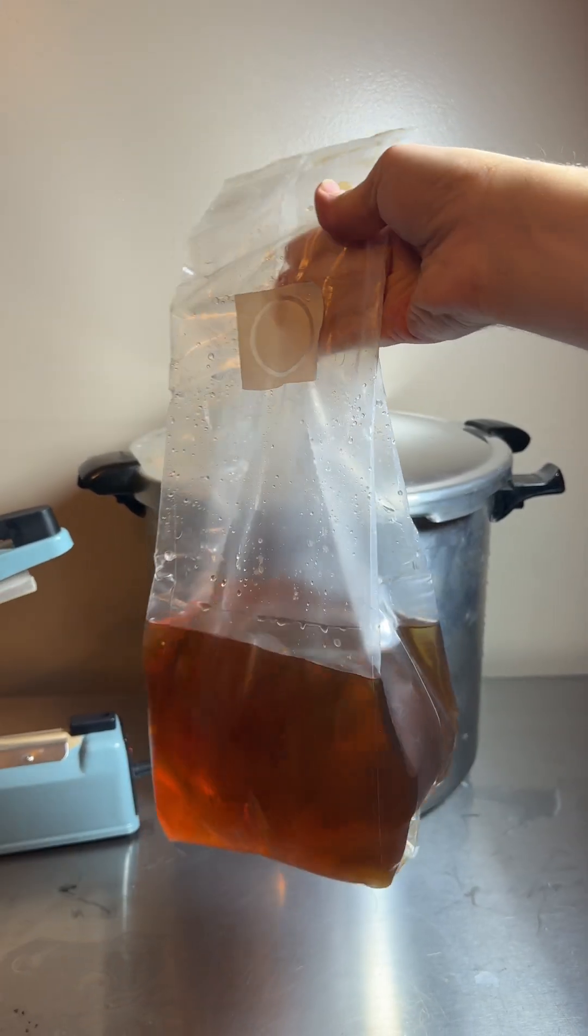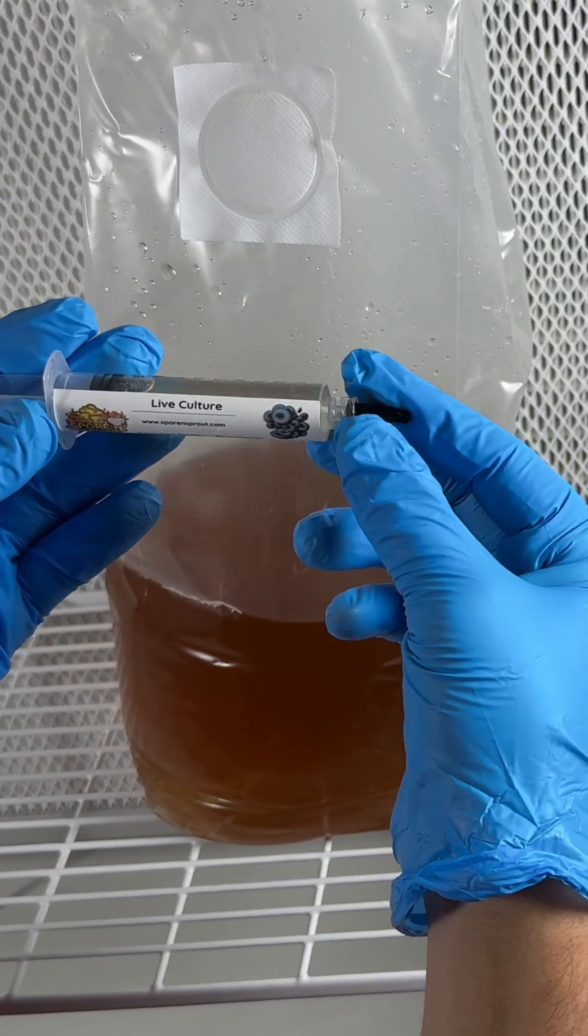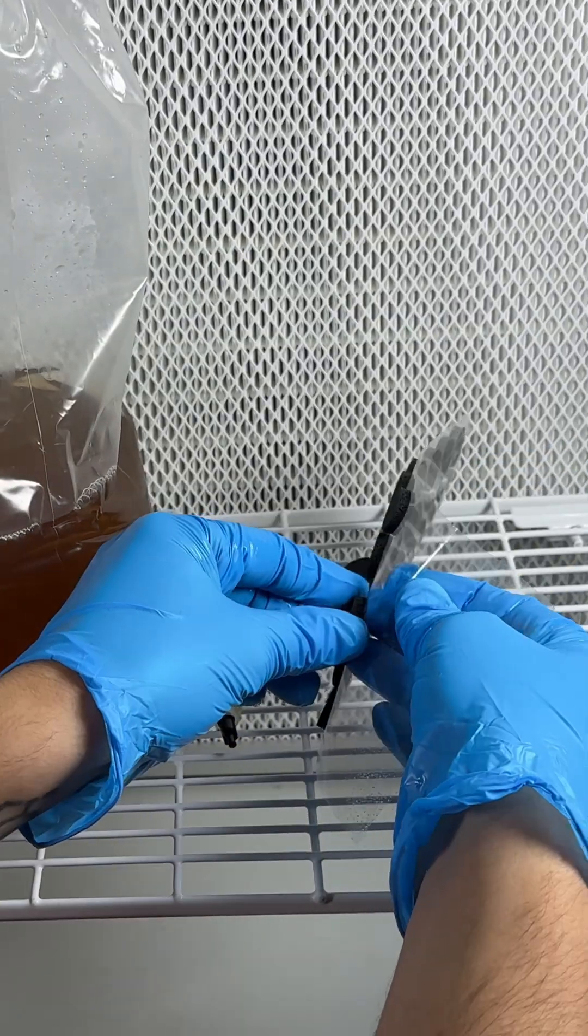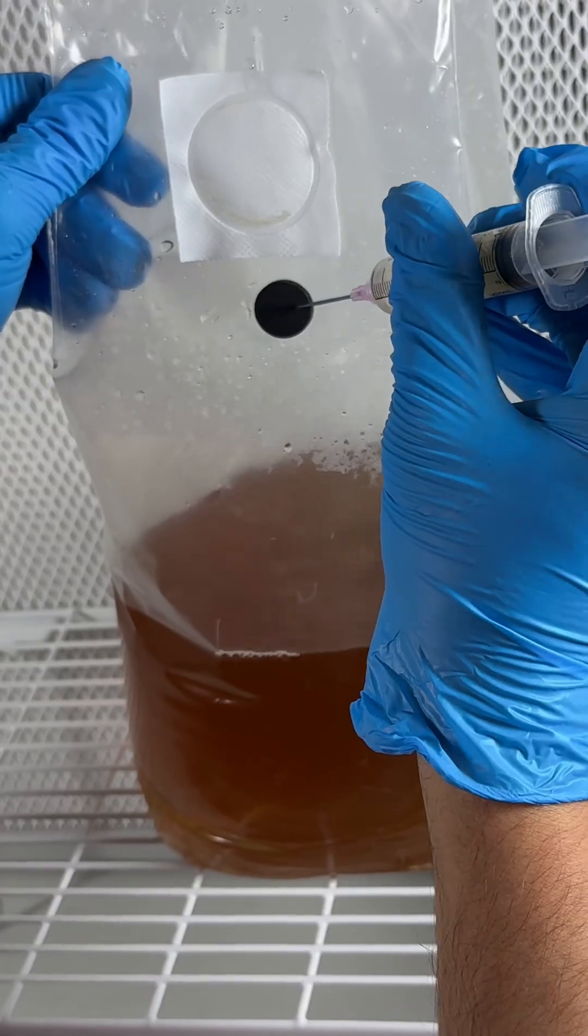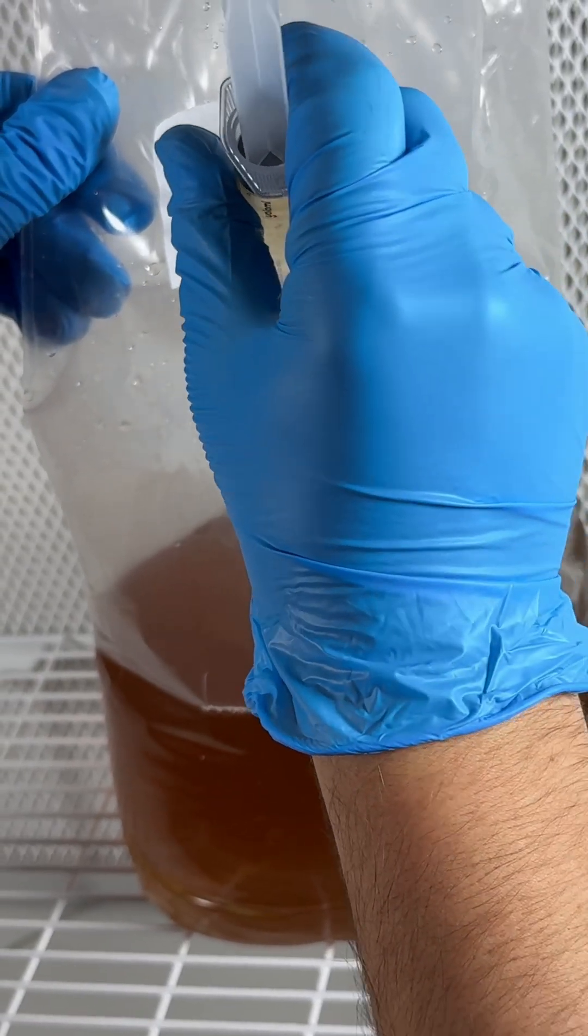Now that the bag is sterilized and sealed, I inoculate it with mushroom liquid culture. I just use one of these injection ports and stick it anywhere on the bag, and then I inject through it with a sterile needle and empty the syringe of liquid culture.